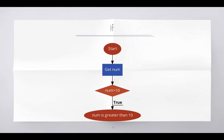Here you can see a flowchart which describes how if works. First we will start the program, then we will get a number from the user. Then we will check if the number is greater than 10. If the number is greater than 10, it is true, so we print 'num is greater than 10'. Now we are going to implement this in Python.